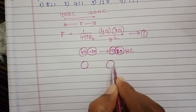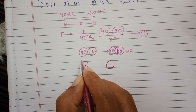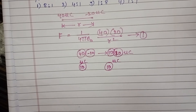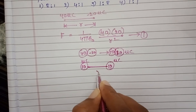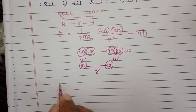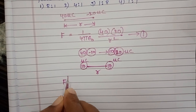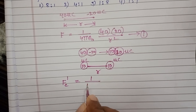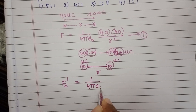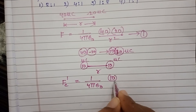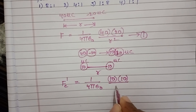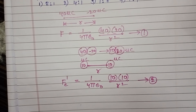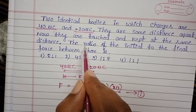After separation to the same distance r, the first charge is 10 microcoulombs and the second charge is also 10 microcoulombs. The new electrostatic force F_e dash equals 1 over 4 pi epsilon naught, multiplied by 10 into 10, divided by r squared. This is equation 2.